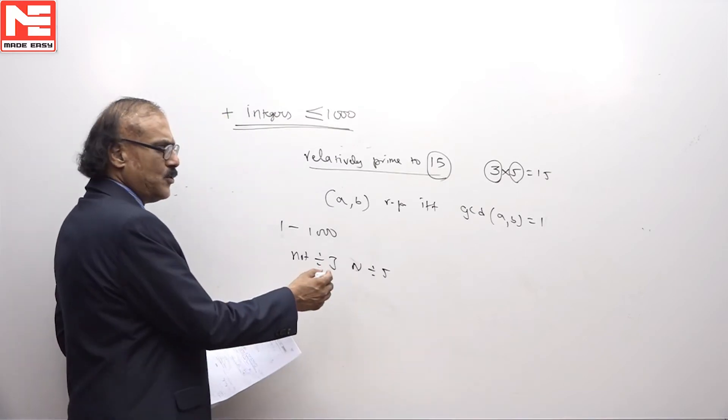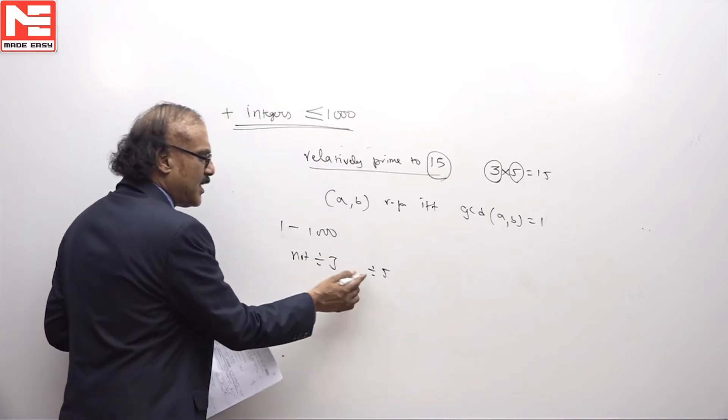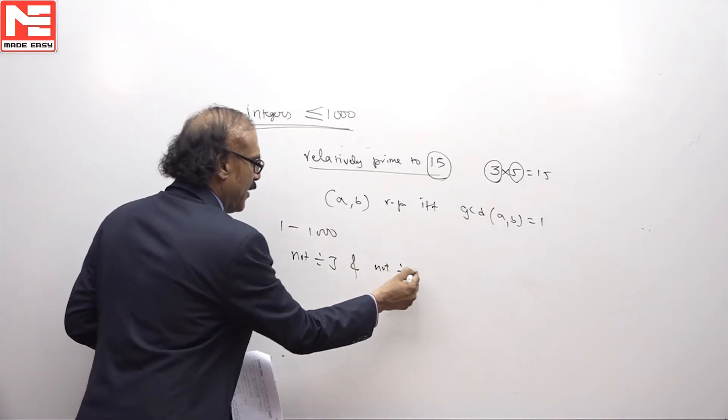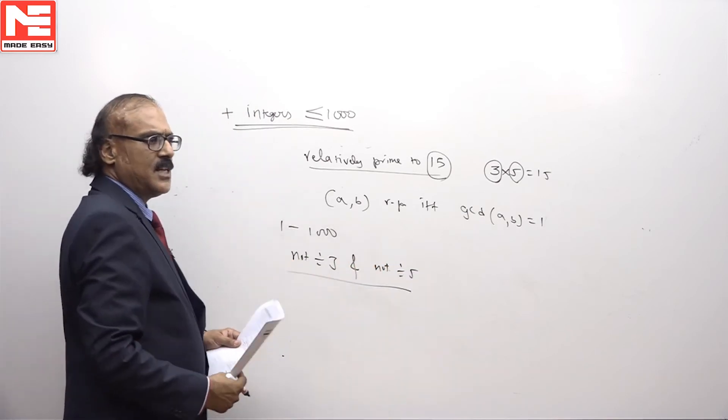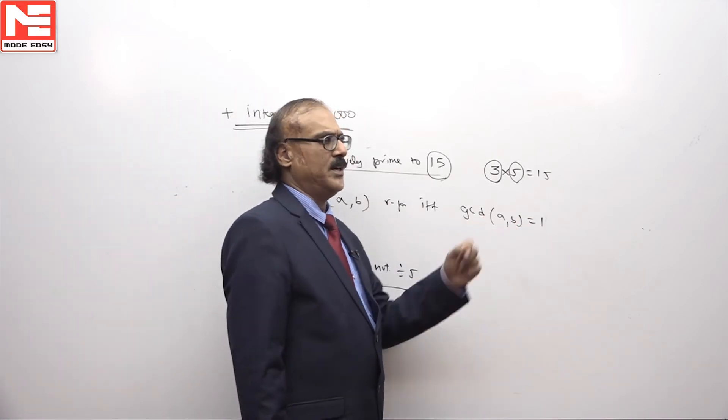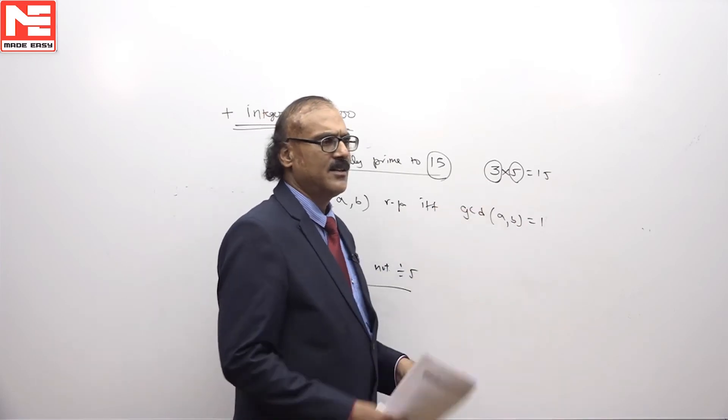What we wish to know is not divisible by 3 as well as not divisible by 5, because if it is divisible by even one of them then the GCD will not be equal to 1. It will be either 3 or 5.